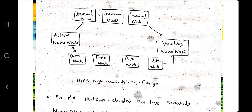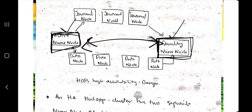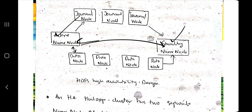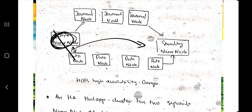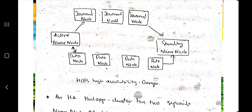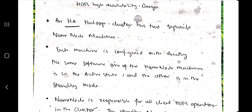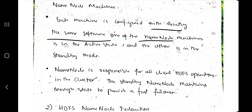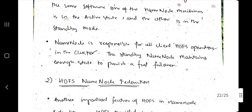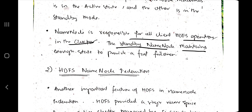For high availability, we use a standby name node alongside an active name node. These two nodes are completely similar — same features, same data, same operations; the standby is essentially a clone of the active. The active name node performs all operations, and everything it performs is stored in parallel on the standby. When the active fails, the standby comes into the picture and continues operations. In the exam, write: the HA Hadoop cluster has two separate name node machines — active and standby — each configured with exactly the same software. The standby name node maintains enough state to provide a fast failover.